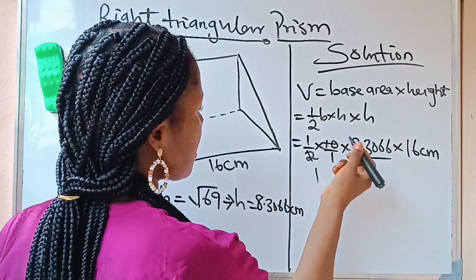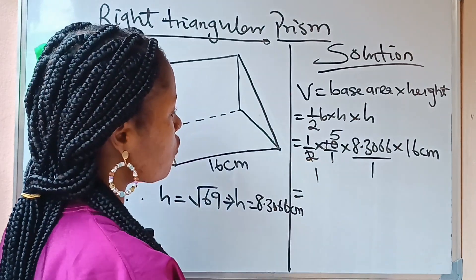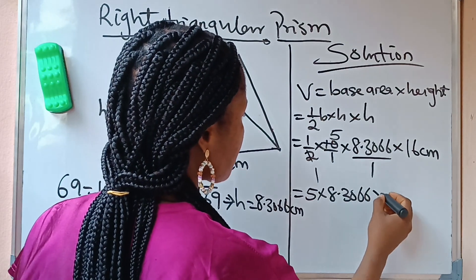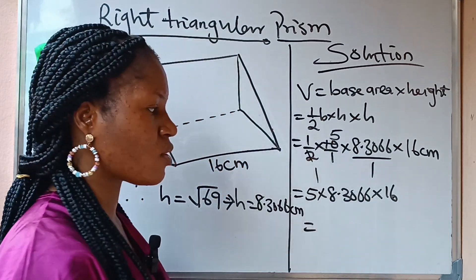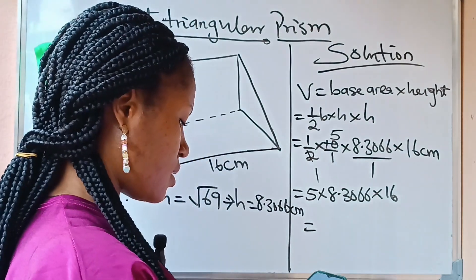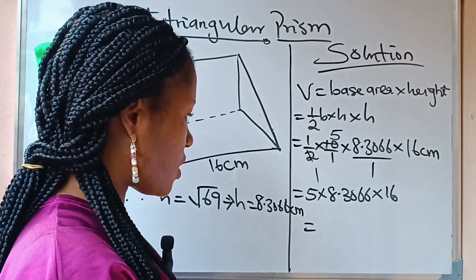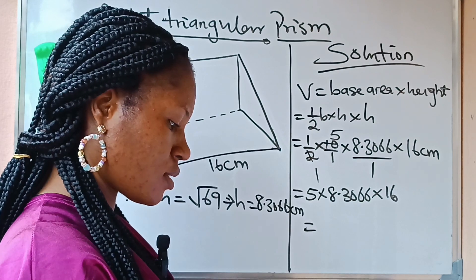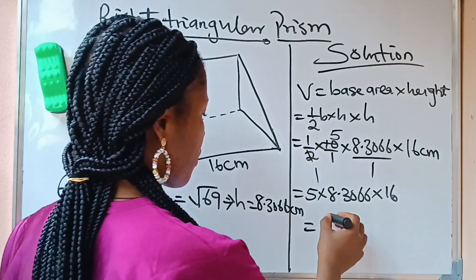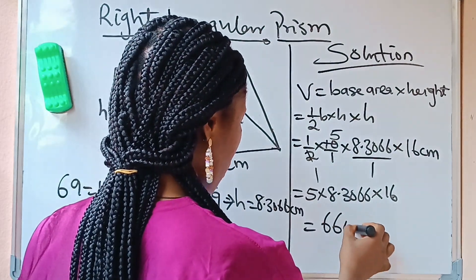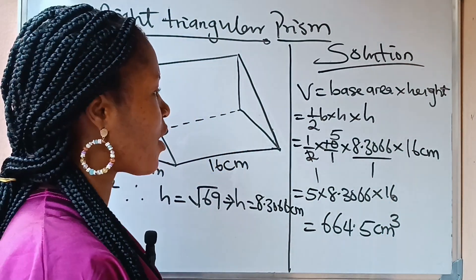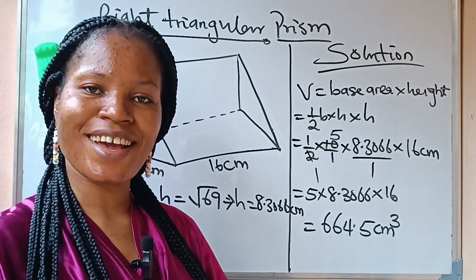One half times 10 simplifies to 5, so our volume is 5 times 8.3066 times 16. When you multiply this out, you get 664.5 cm cubed, and this is your final answer. Thank you for watching and see you next time.